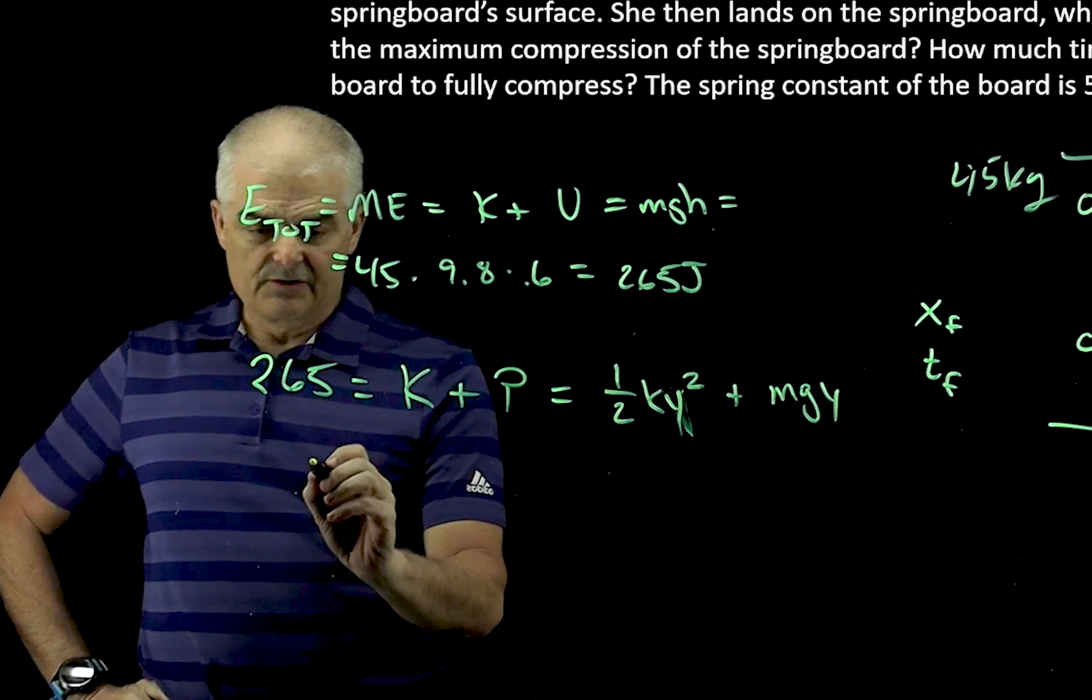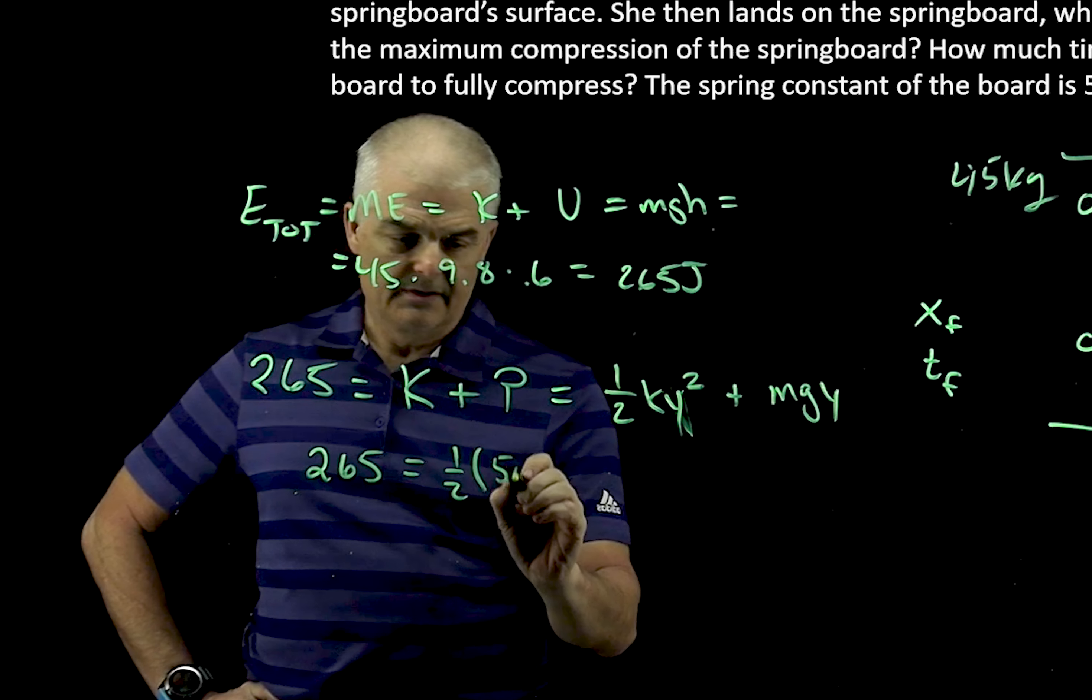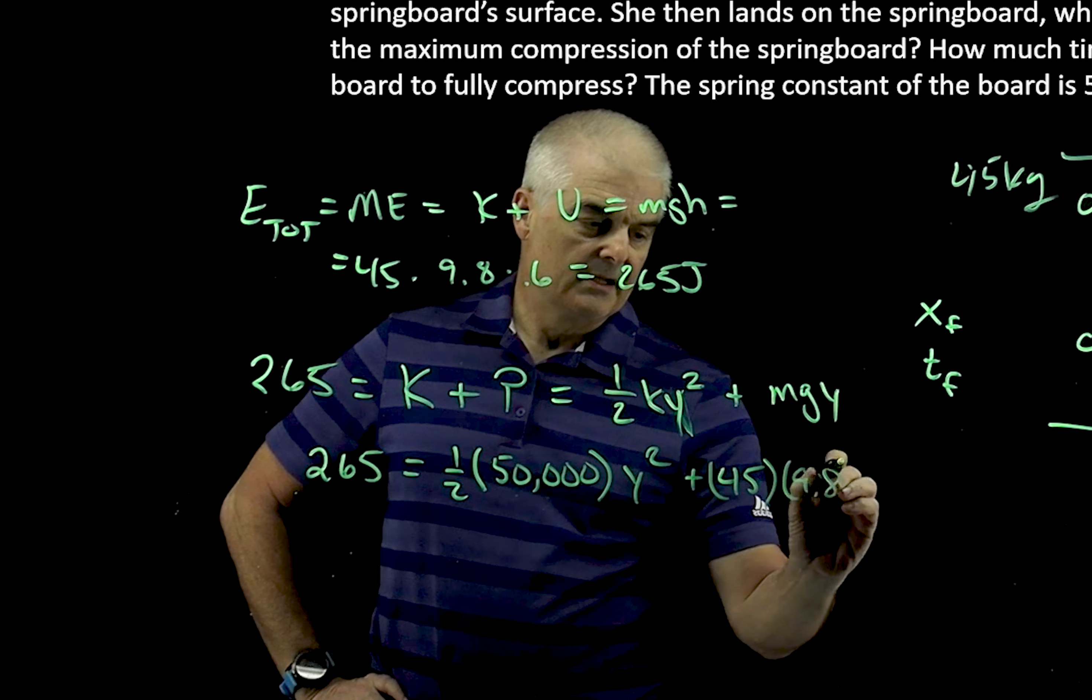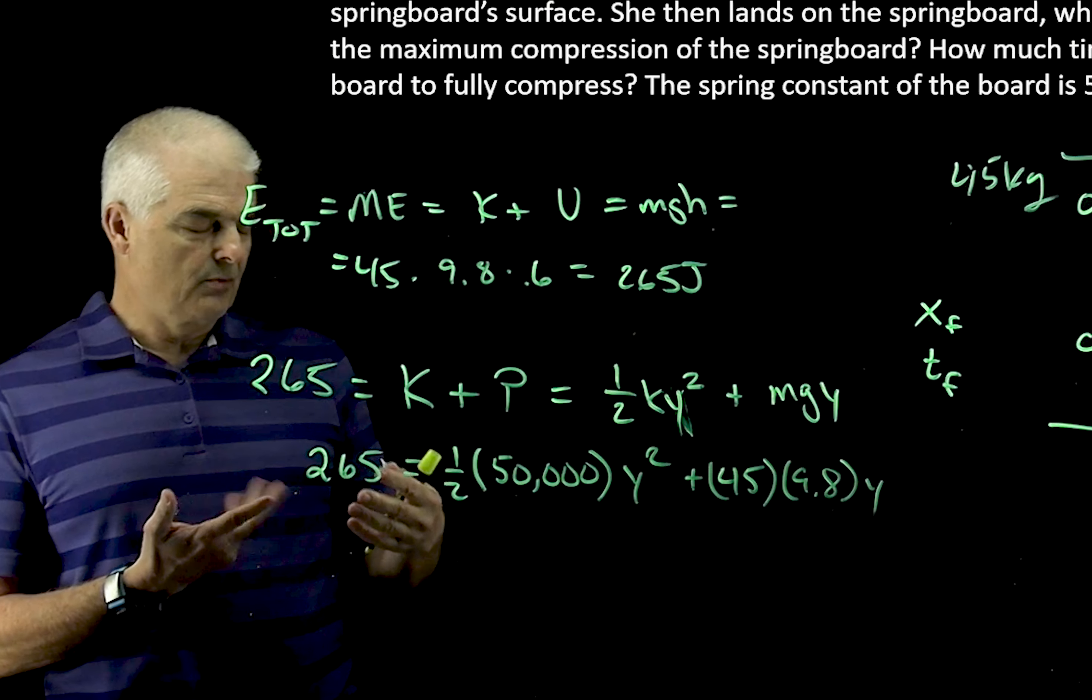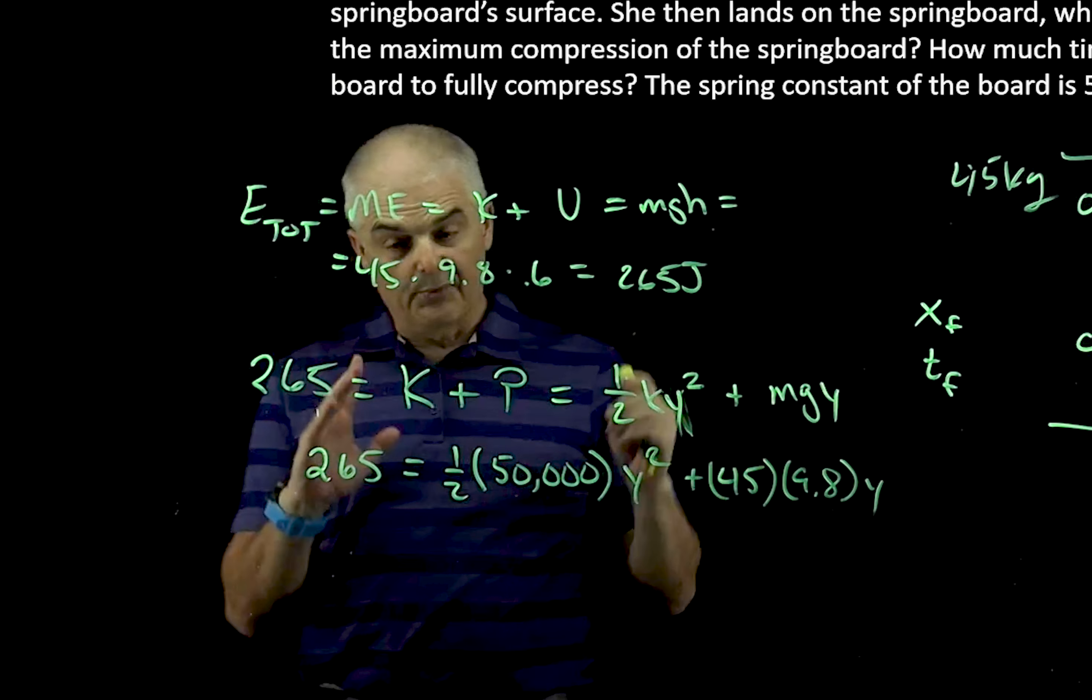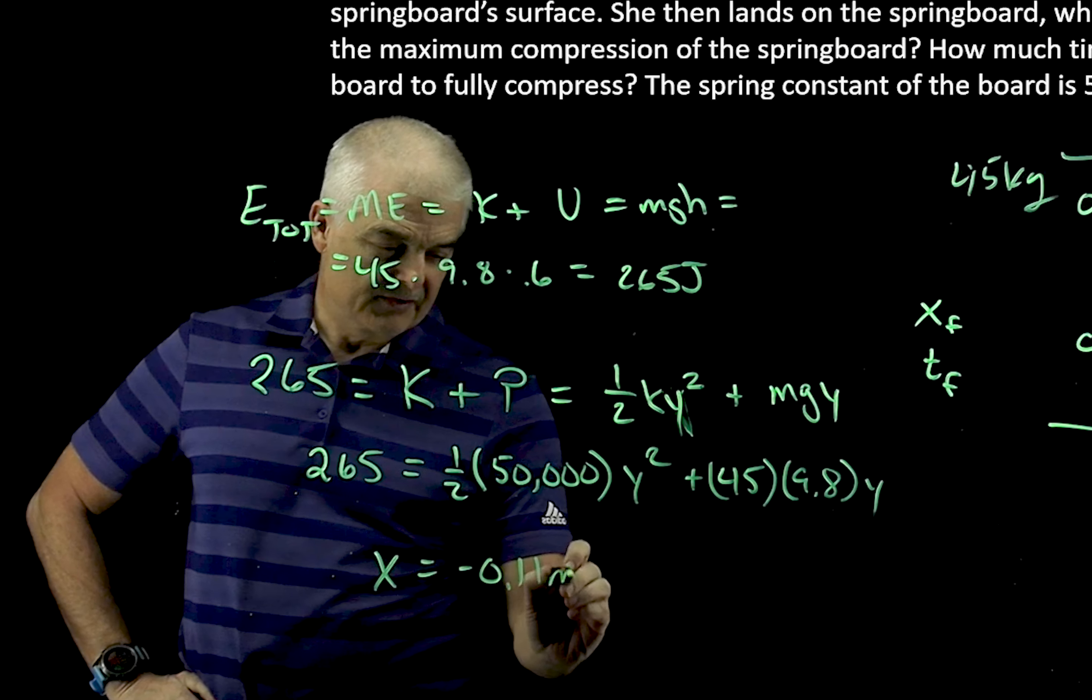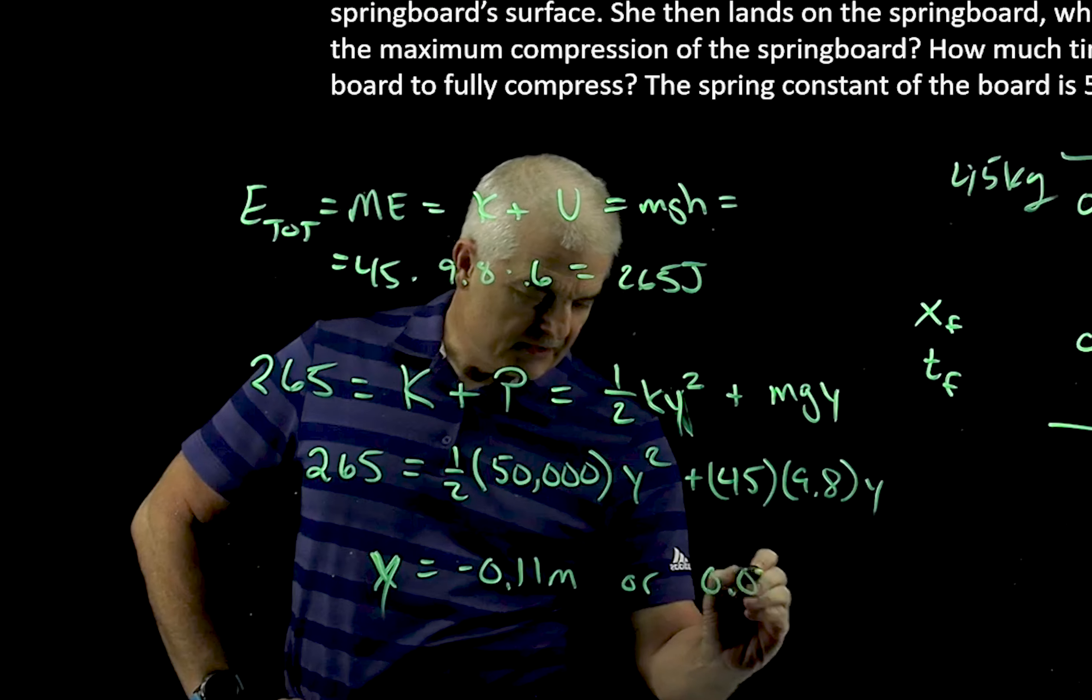If you notice here, we've got a y and a y squared, and we're going to basically plug some numbers in. So if I say 265 equals one-half times 50,000 times y squared plus her mass, 45 times 9.8 times y. If you recognize this, we've got a y squared and y. We've got one equation and one unknown, but it's a quadratic formula problem. We could do all the quadratics, or I put it in my solver. When I put it in my solver, there's going to be two answers.